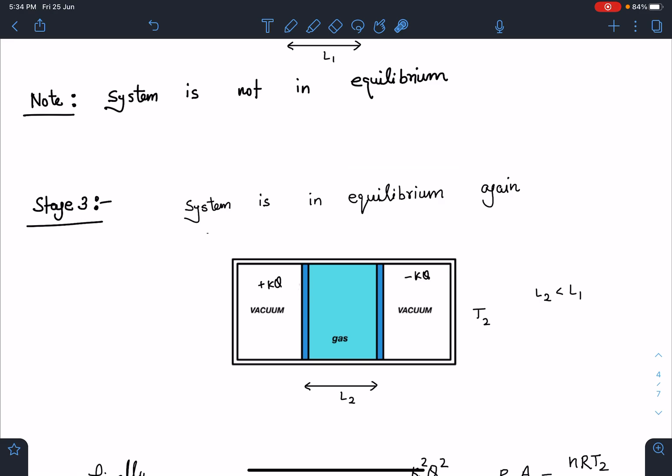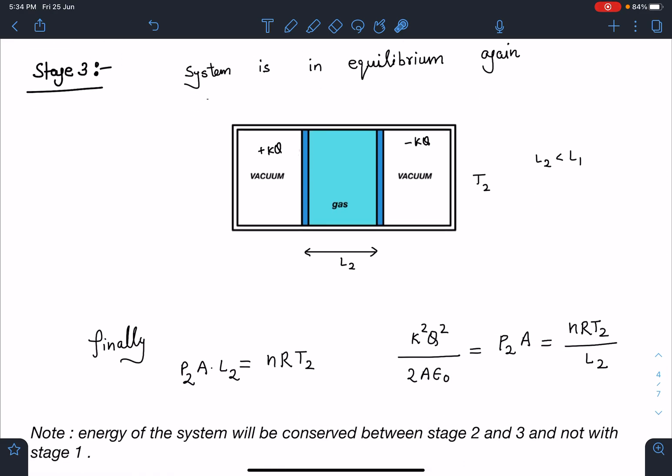Now system is in equilibrium here so I can balance the forces one more time and finally also PV is equal to NRT we can apply and this new force Q squared by 2 epsilon not must balance the pressure force. So again we are getting this NRT2 by L2.